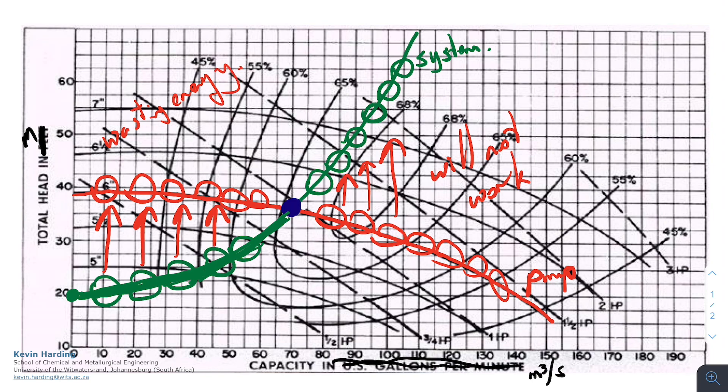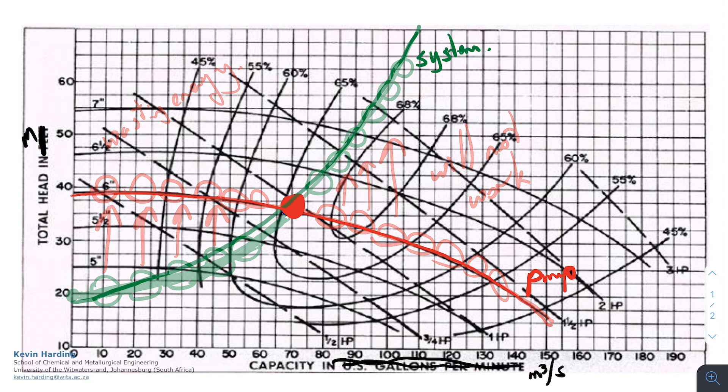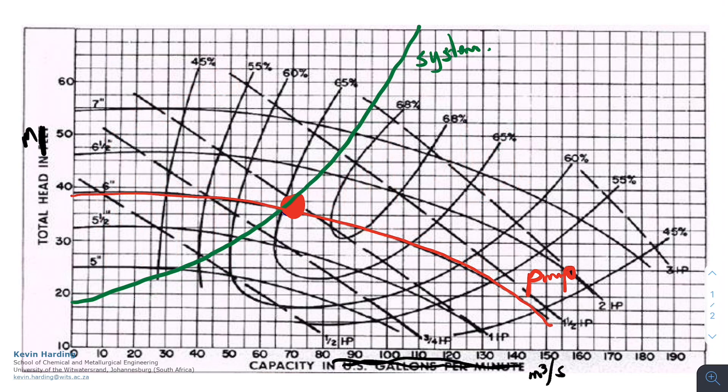So because of that, the point that we are going to choose as our operating point, the most efficient point on the graph, is going to be the intercept. So just neatening that up a bit, what we are now saying is that if we have a pump curve in the red and the green curve is our system curve, the point where the intercept is going to be our operating point. From that operating point, we can read off the actual Q value, and then along to the left, we can read off our actual head for this system with this six inch pump as in front of us.